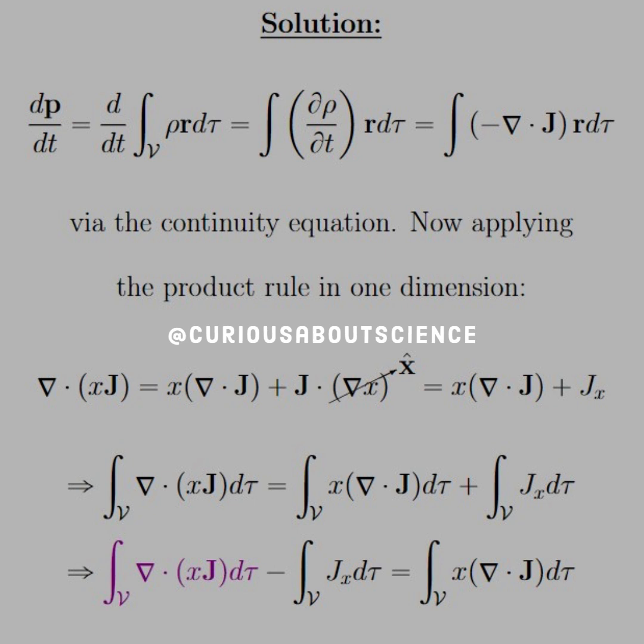Alright, so let's go ahead and integrate this whole expression, since we're working in integrals. So these are volume integrals. So we have the divergence of x and J, the volume integral, is equal to the volume integral of x times the divergence of J plus the integral of the x component of J.